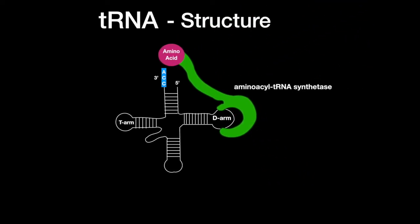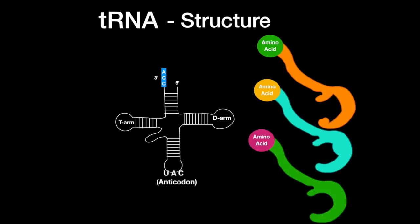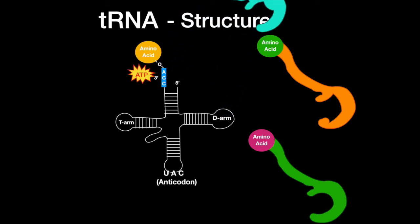Aminoacyl tRNA synthetase uses ATP to charge the tRNA. Incorrect matching of amino acid to tRNA will be removed by hydrolysis.